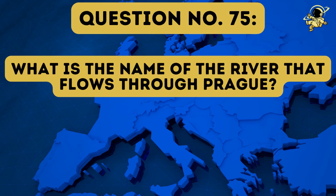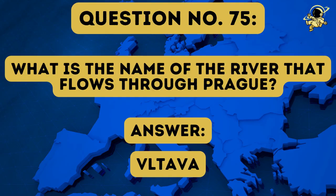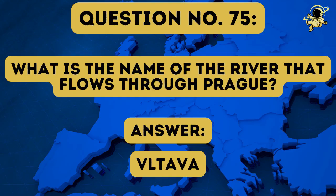Question number seventy-five: What is the name of the river that flows through Prague? And the answer to question number seventy-five is the Vltava. And with that we have managed to get through three quarters of the game already. So congratulations if you are still playing — then we go to the exciting last quarter.